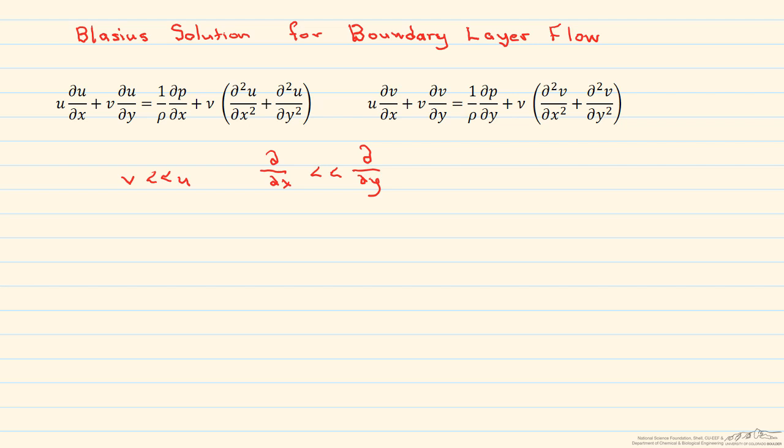We can make these assumptions since the boundary layer is thin, because then the velocity normal to the plate will be very much less than that parallel to the plate, and the rate of change of any parameter across the boundary layer, through its thickness, is going to be much greater than that along the flow direction.